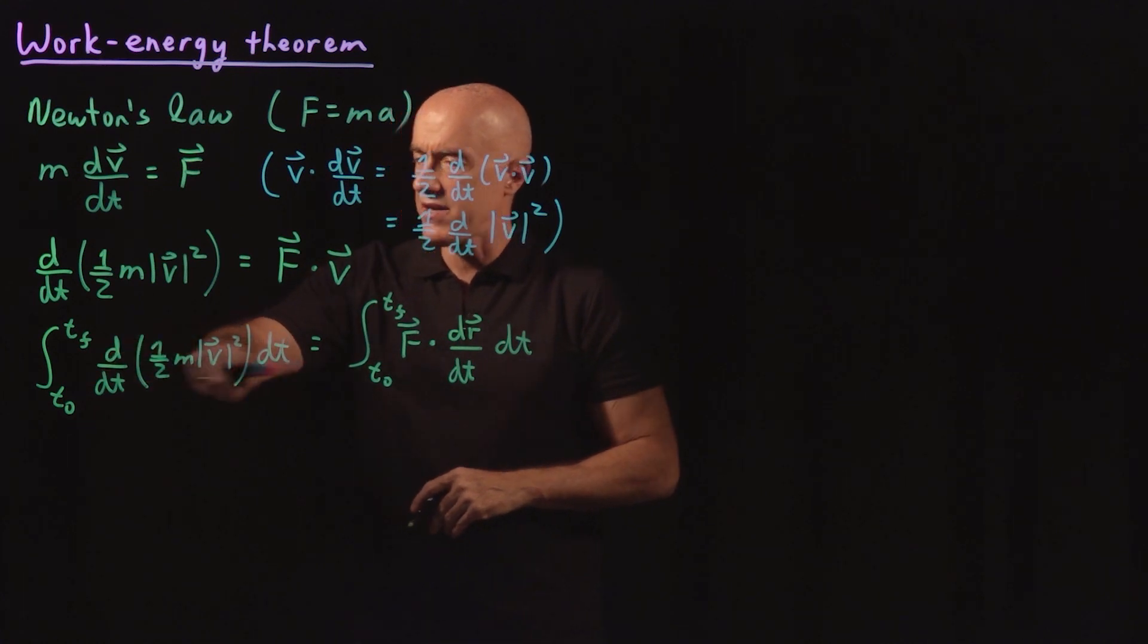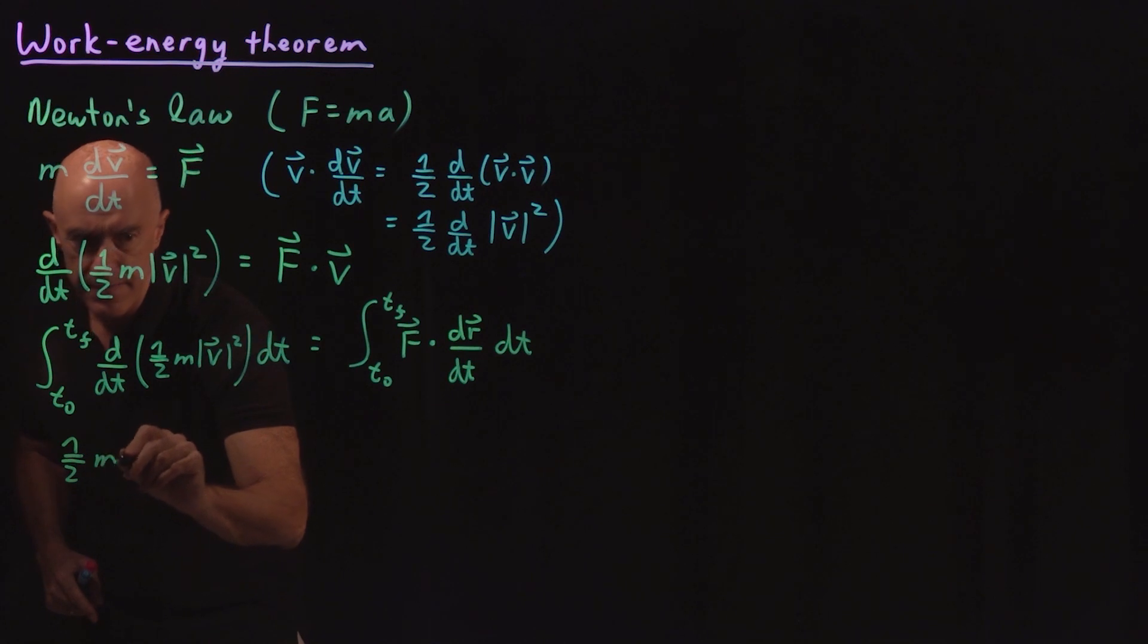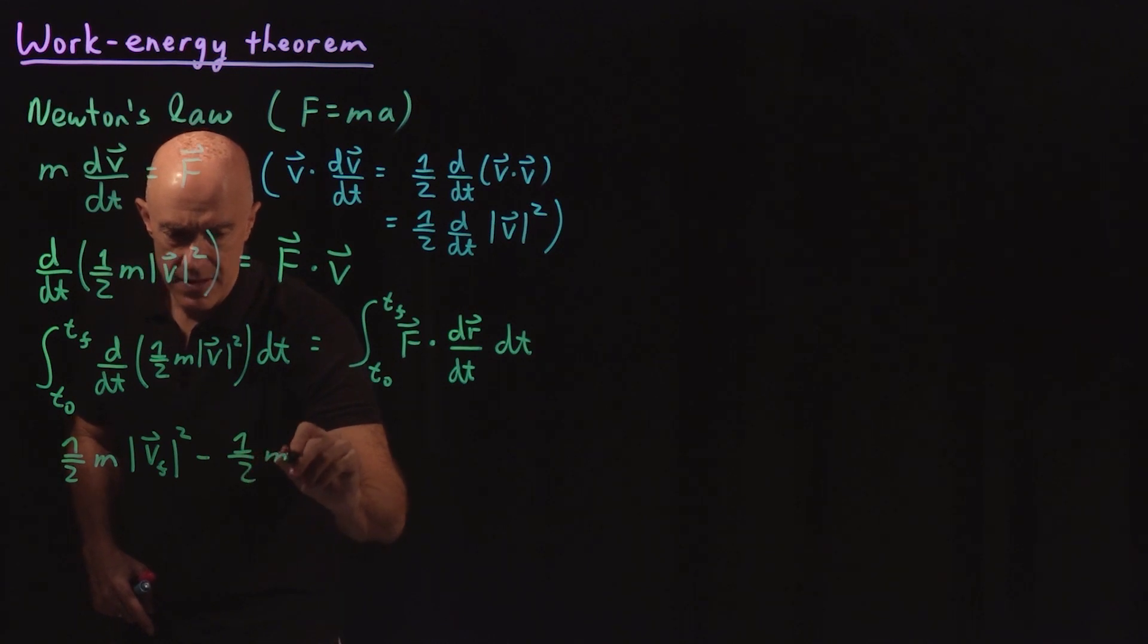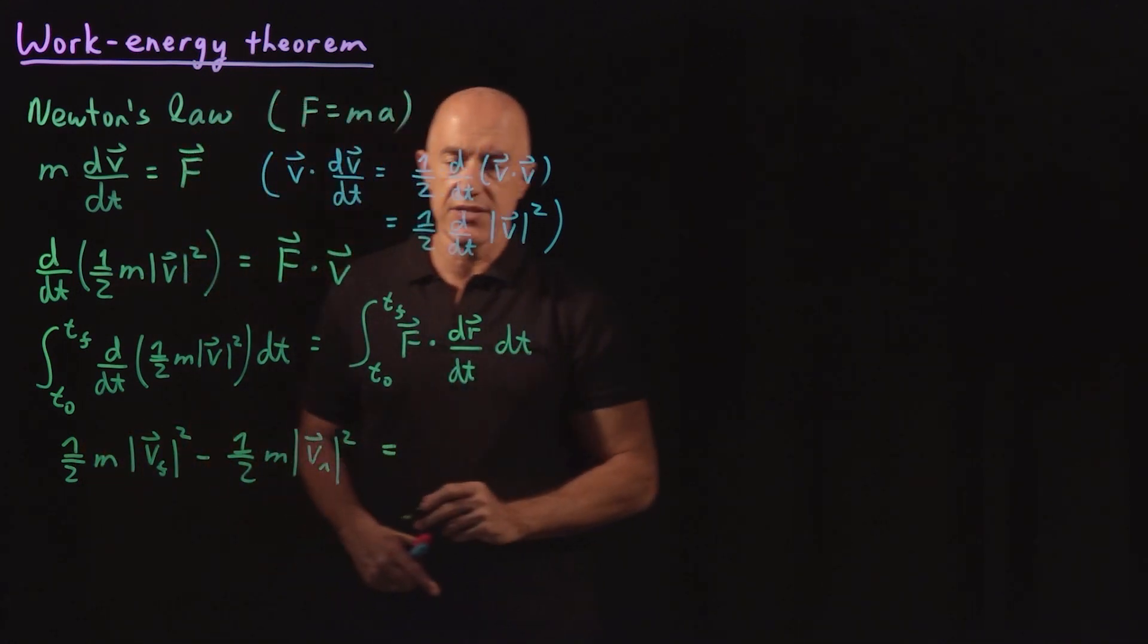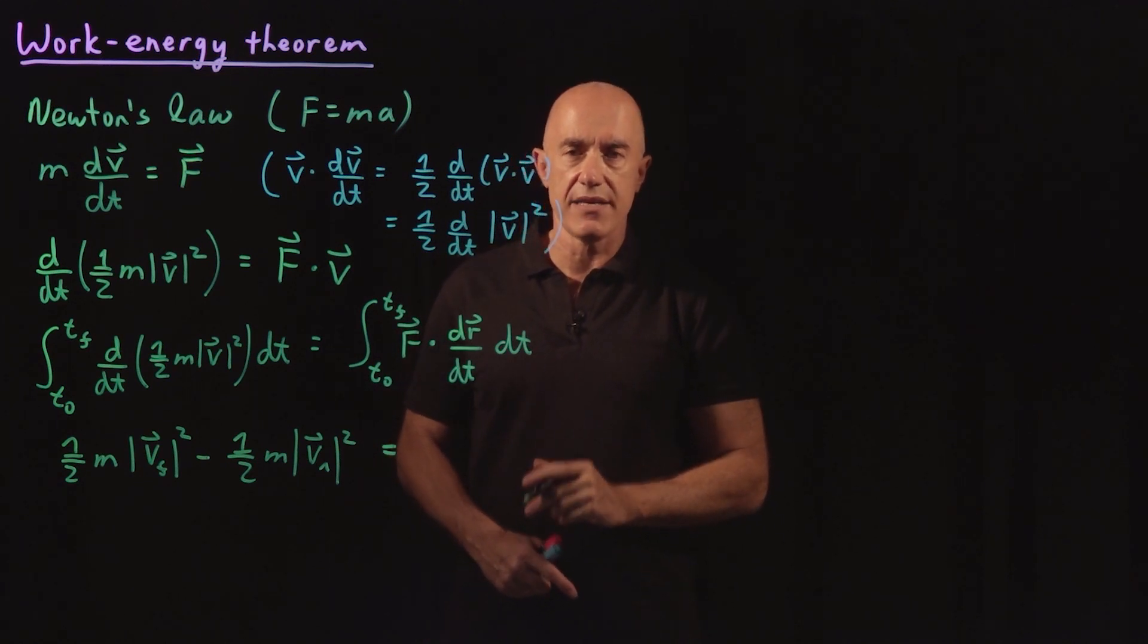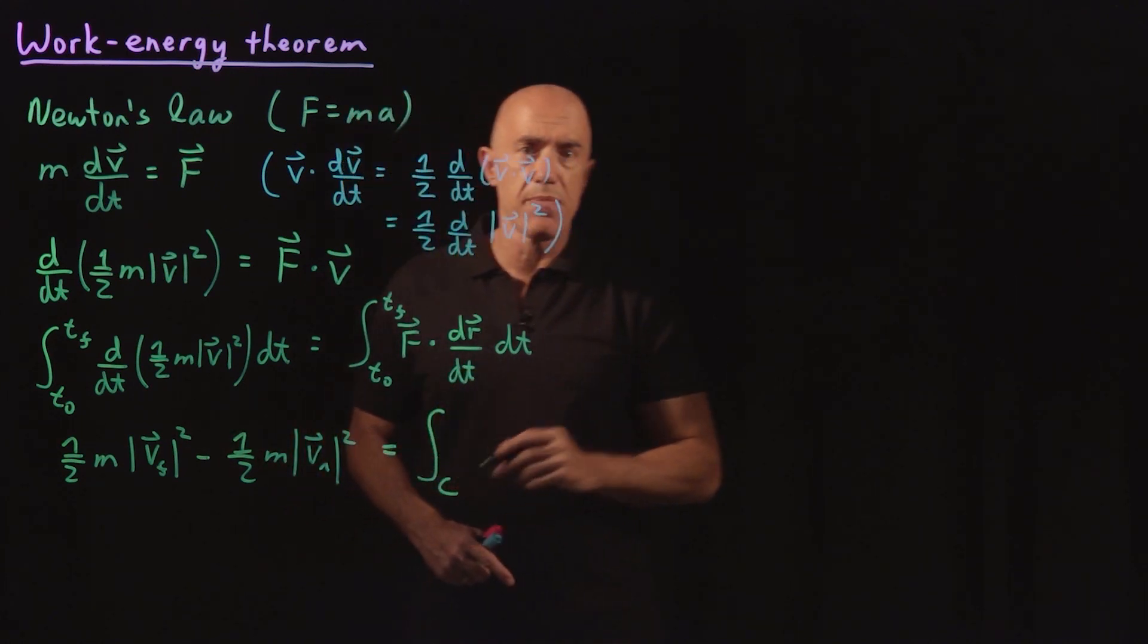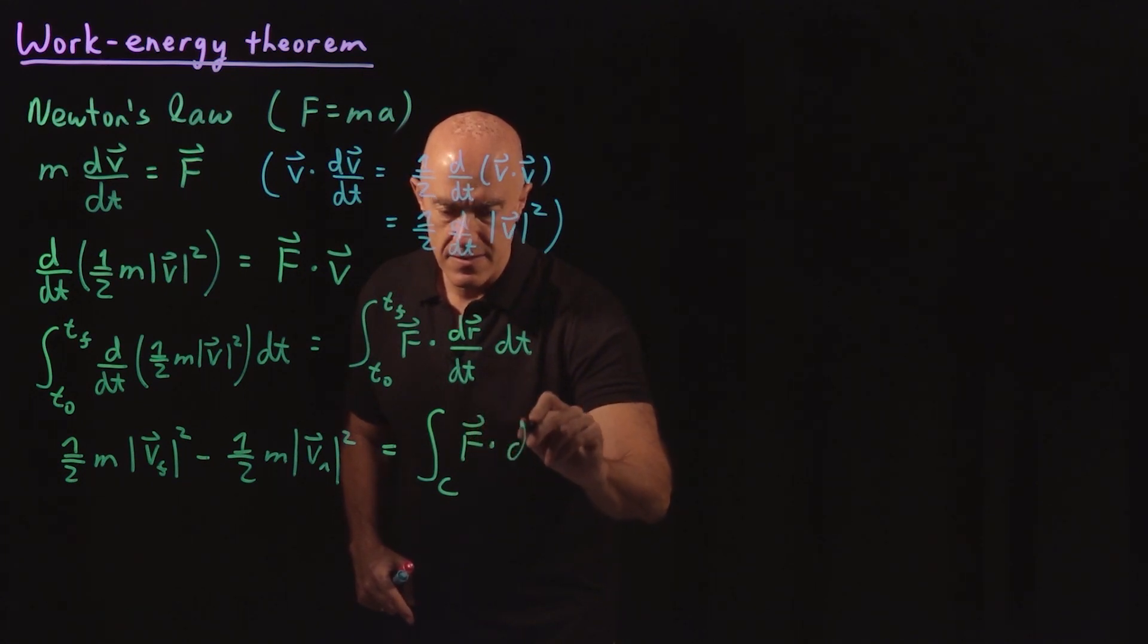We use the fundamental theorem of calculus here. So this becomes one half m times the final velocity magnitude squared, so the speed squared, minus one half m times the initial velocity magnitude squared, speed squared. And the right-hand side then becomes our line integral of a vector field. So it's the integral over the curve followed by the mass of F dot dr.